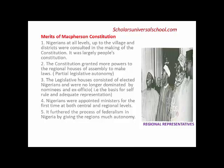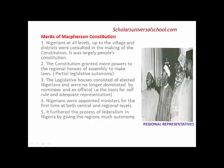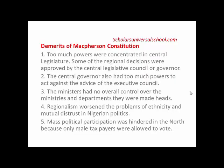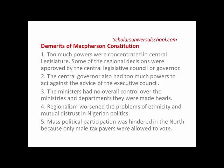The pictures here show regional representatives we had in Nigeria — including Chief Obafemi Awolowo, Abubakar Tafawa Balewa, Ahmadu Bello, and Dr. Nnamdi Azikiwe. We now move to the demerits of the Macpherson Constitution. Demerit number one: too much power was concentrated in the central legislature.